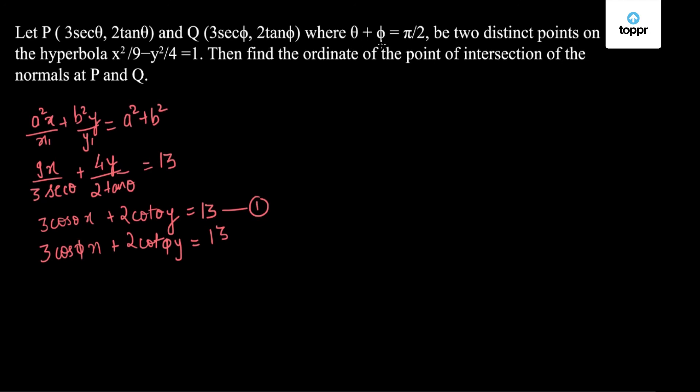Now we know that θ + φ = π/2. So φ can be written as π/2 - θ. So we will replace the value of φ by π/2 - θ. So we will get 3tanθ x + 2tanθ y = 13. So this becomes my equation 2.